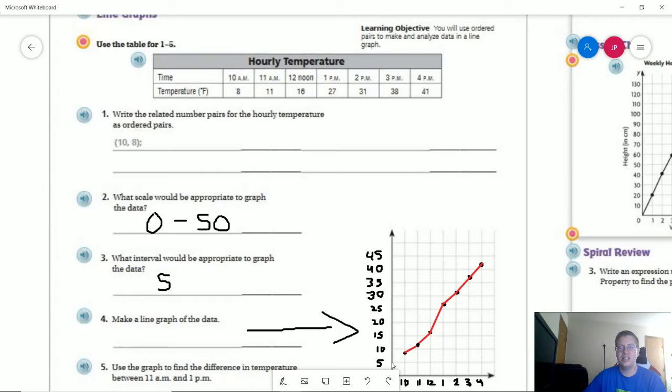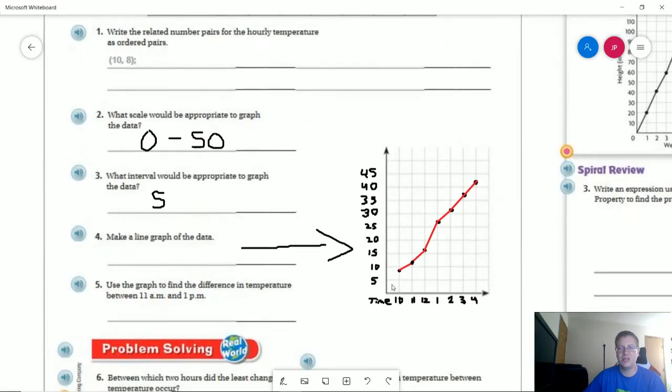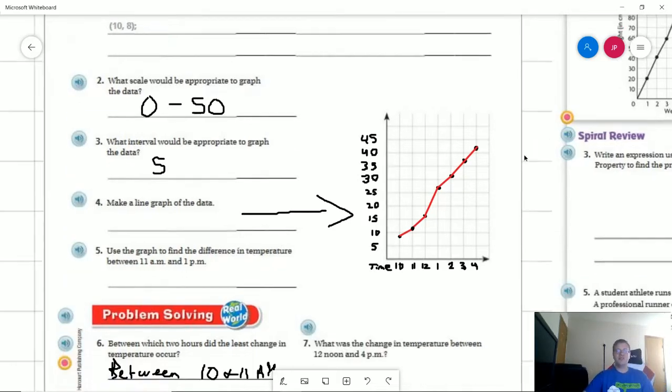If we started here with six and counted up by fives, we would just have to put a little thing in there that they did in the book to show that this part here is not zero to six, then we're counting by fives from there. So just for sake of argument.